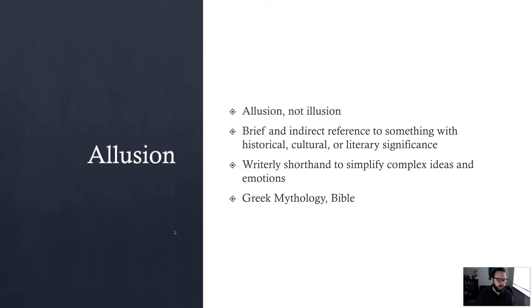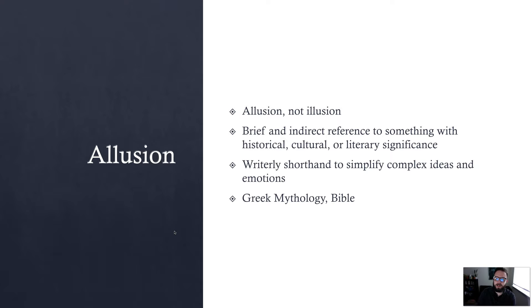A great example would be to say that somebody is 'tilting at windmills.' That refers to Miguel de Cervantes' novel 'Don Quixote,' where the main character Don Quixote is attacking what he thinks are giants, but they're just windmills. What that does is tell us that someone is on a kind of foolish, hopeless quest to conquer something, yet that person is still going for it. Allusions are writerly shorthand — they're a way to simplify complex ideas and emotions by relying on previous knowledge to give us a shortcut.